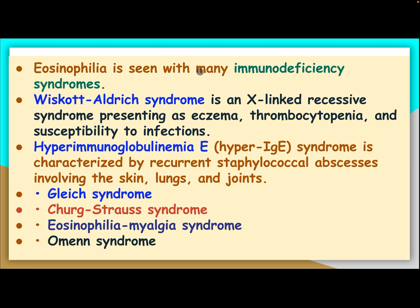Eosinophilia is seen with many immune deficiency syndromes, like Wiskott-Aldrich syndrome — an X-linked recessive syndrome presenting as eczema, thrombocytopenia, and susceptibility to infection. Hyperimmunoglobulinemia E (hyper-IgE syndrome) is characterized by recurrent staphylococcal abscesses involving the skin, lung, and joint. Other associated syndromes include Gleich syndrome, Churg-Strauss syndrome, eosinophilia-myalgia syndrome, and Omenn syndrome.